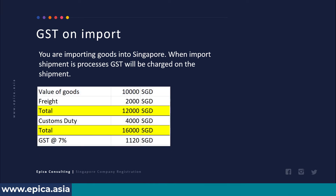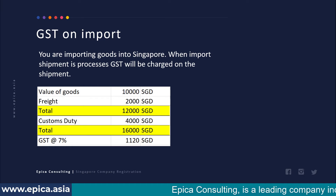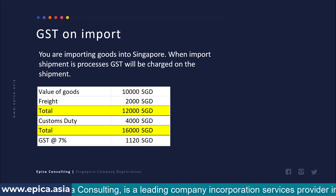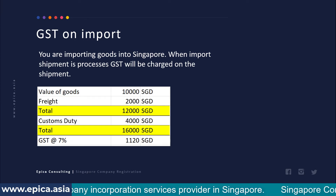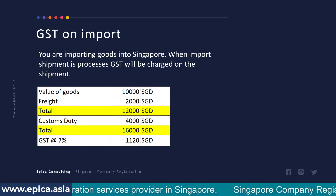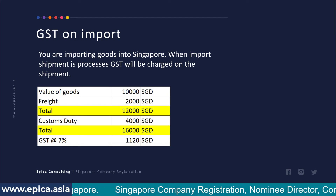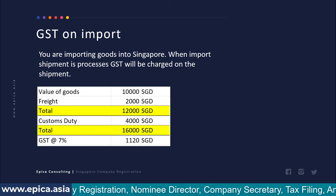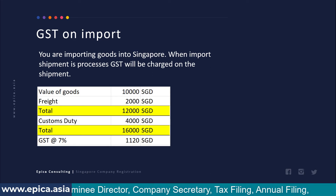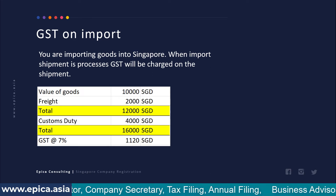Let's take an example. Suppose the value of goods you are importing is 10,000 Singapore dollars, on which you have paid freight of 2,000, bringing the total to 12,000 Singapore dollars. Then customs duty will be charged on that, bringing the total to about 16,000 Singapore dollars, and then GST at seven percent will work out to 1,120 Singapore dollars.